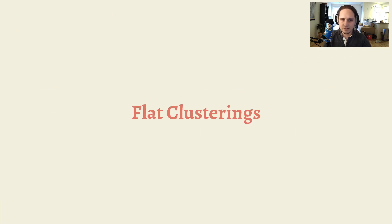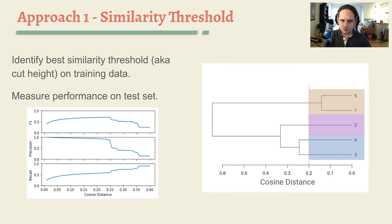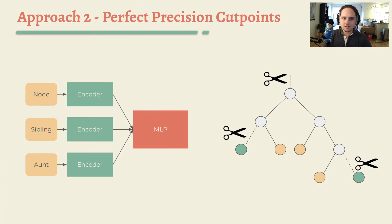We additionally investigate methods to produce flat clustering of mentions from the cluster tree. The first approach is to employ a similarity threshold, or a height at which to cut the tree into subtrees. We identify this by measuring the b-cubed score for various thresholds on a tree constructed from held-out data, and use the threshold which maximizes this score. The second approach is to train a simple neural classifier to predict perfect precision cut points, or the minimal set of nodes at which to cut the tree so that no mentions of different entities end up in the same cluster.